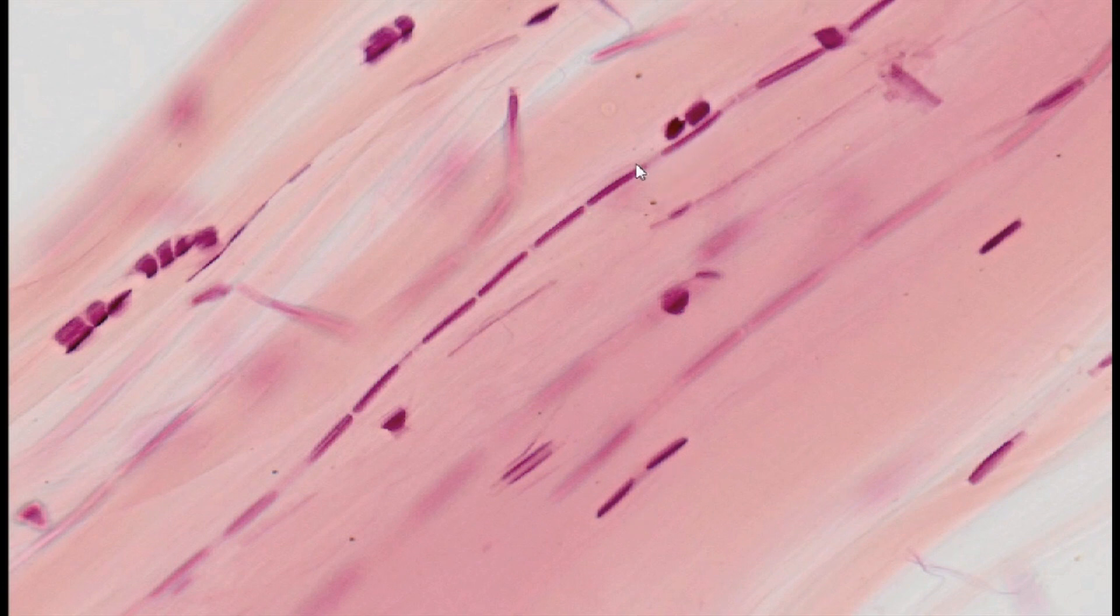They form threads known as the nodes of tendinosis. This orderly system can become disorganized as a result of tendon degeneration, known as tendinosis, manifested by tendon thickening, increased fibrocytes, and poorly organized collagen fibers including type 3 collagen.